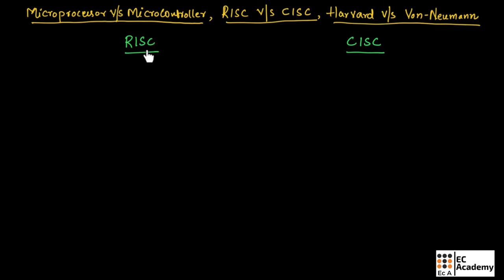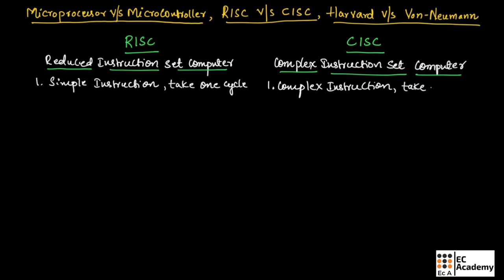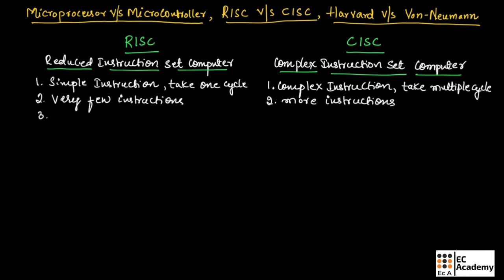Now let us understand the difference between RISC and CISC architecture. RISC stands for Reduced Instruction Set Computer and CISC stands for Complex Instruction Set Computer. The RISC architecture consists of a simple instruction set that takes only one cycle for its operation. CISC architecture consists of a complex instruction set that takes multiple cycles for its operation. RISC architecture consists of very few instructions, while CISC architecture consists of more instructions. RISC instructions are executed by hardware, whereas CISC instructions are executed by micro programs.